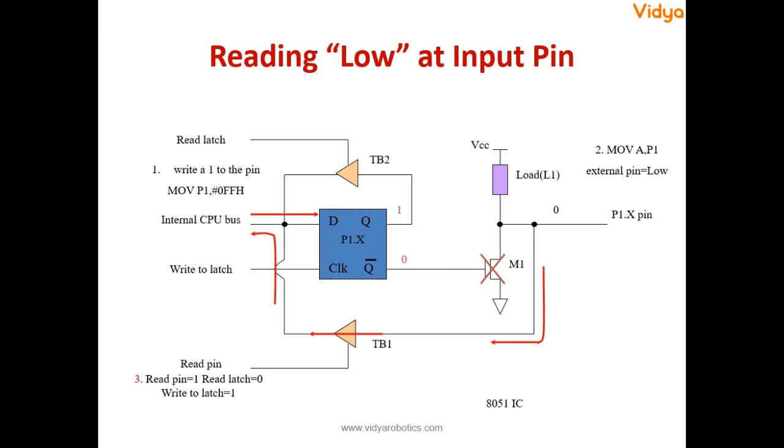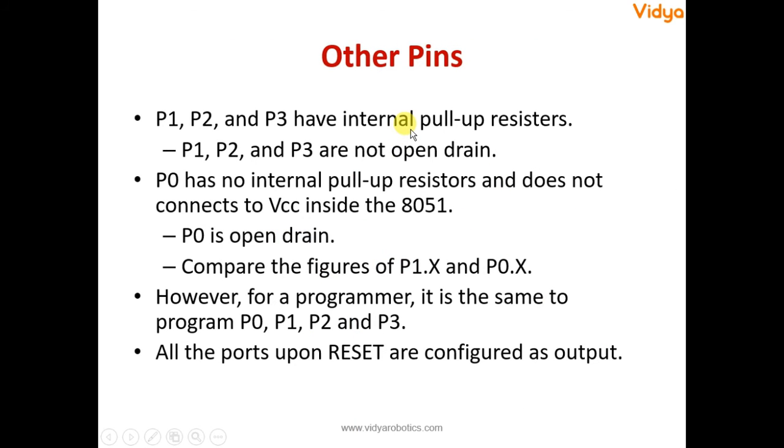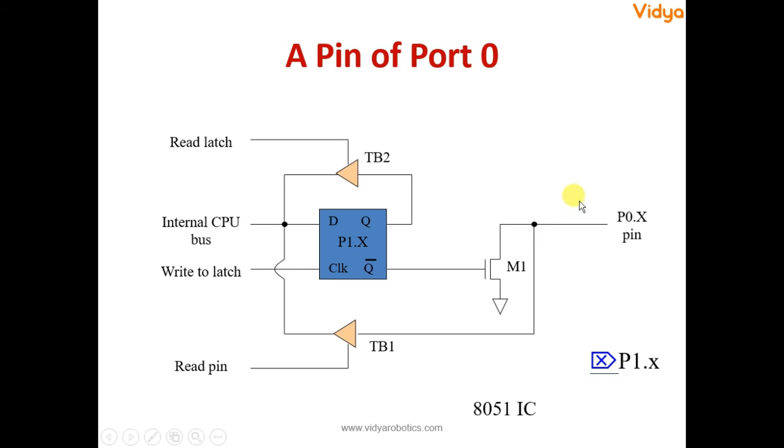And we can see here we saw that there is a transistor and then there is a pull up resistor associated with this transistor. With port 1, 2 and 3, these pull up resistors are present internally. But with port 0, the pull up resistor is not available internally. And that is why the port 0 pins looks like this.